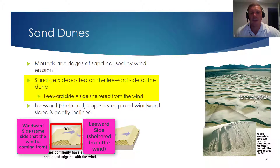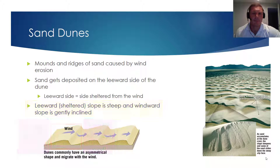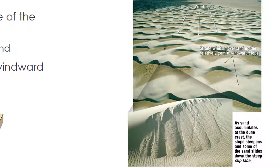The windward side is the side that the wind is coming from. Generally speaking, the leeward side, or the sheltered side, will have a very steep slope, but the windward side slope will have a very gentle incline to it. In the image shown at the right, we would be looking into a headwind, meaning that the wind is coming right at our faces. And if you look at the zoomed-in picture of this sand dune, you can see the sand accumulating on the leeward side of the dune.